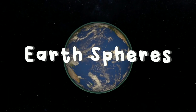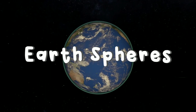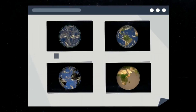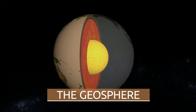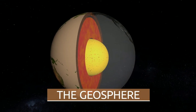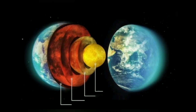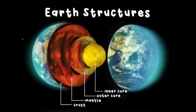The Earth is divided into four spheres: the atmosphere, biosphere, hydrosphere, and geosphere. But let's focus on the geosphere. The geosphere consists of the Earth's structures, which are the crust, the mantle, the outer core, and the inner core.